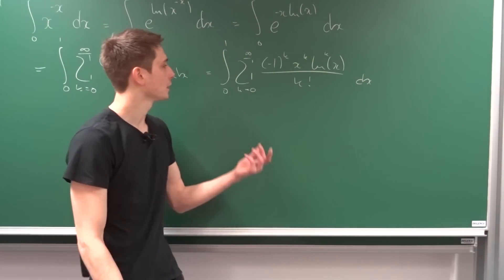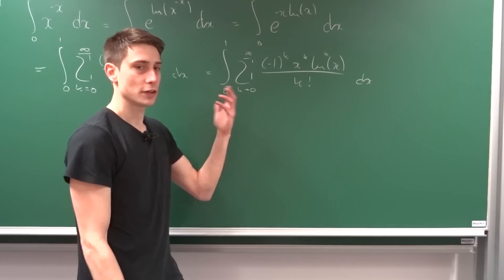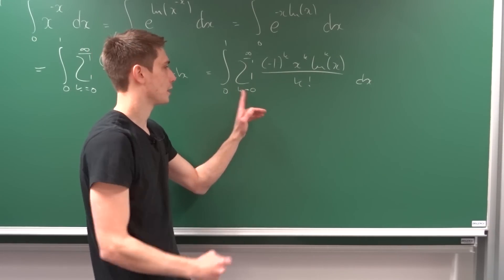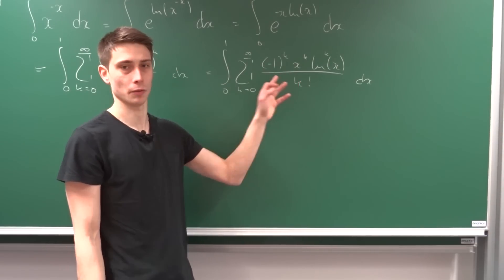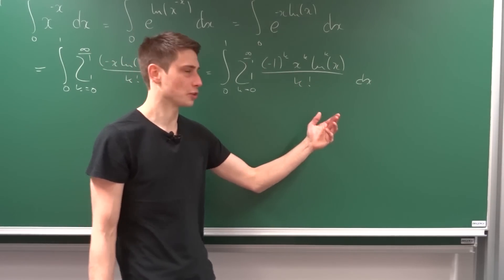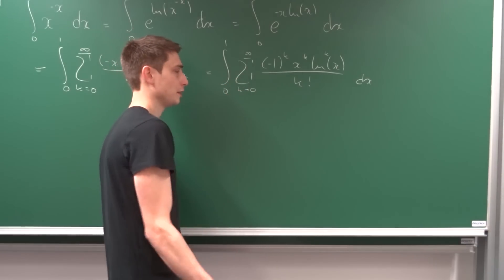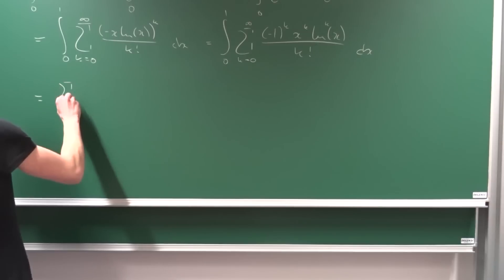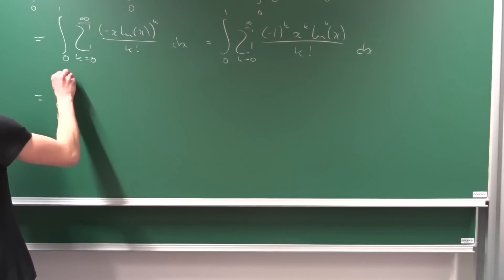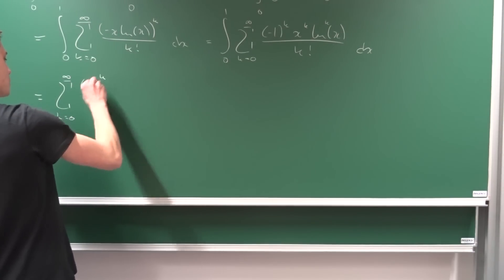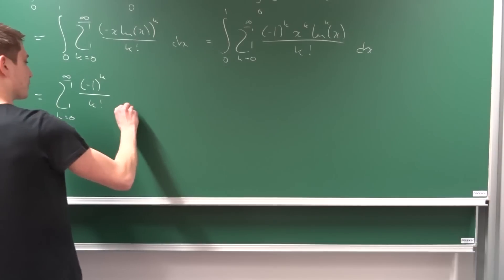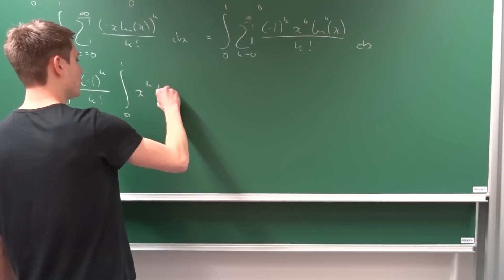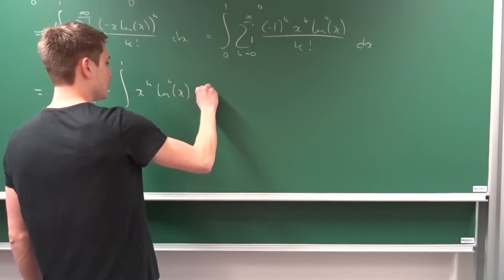Without any restrictions, we are going to assume we can interchange the infinite sum and the integral sign. Also, minus 1 to the kth power and 1 over k factorial are constants in terms of x, so we can bring them in front of the integral. We end up with the sum from k equals 0 to infinity of minus 1 to the kth power over k factorial, times the integral from 0 to 1 of x to the kth power times the natural log of x to the kth power, dx.